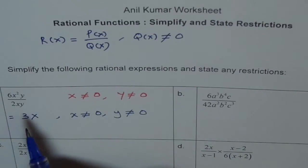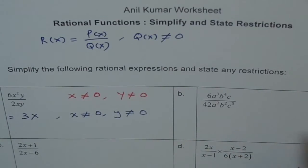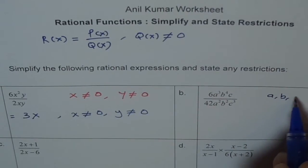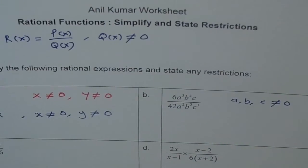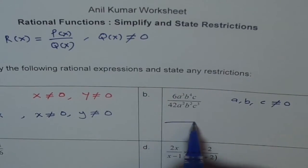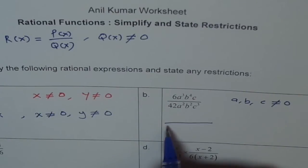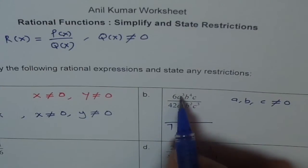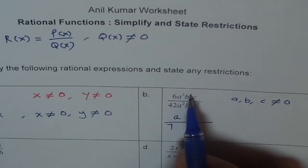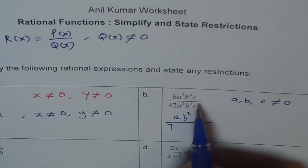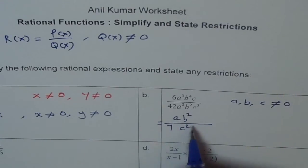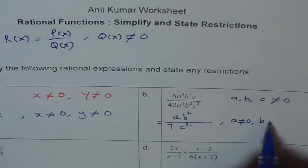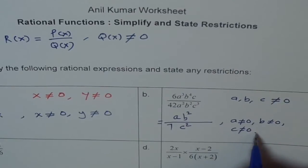Let us move on to the next one — it is very similar. What are the restrictions? Here a, b, and c are all not equal to zero. Now simplify: 6 goes into 42 seven times, so we get 7. For the variables: a³ divided by a² gives a; b⁴ divided by b² gives b²; and c over c³ gives 1/c². So this rational function can be written as ab² divided by 7c², where a, b, and c are not equal to zero.